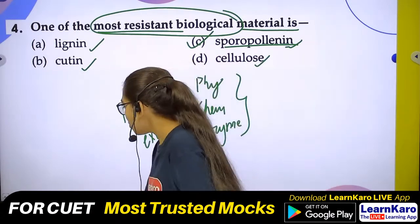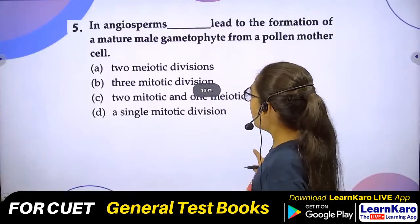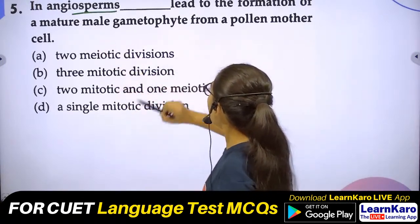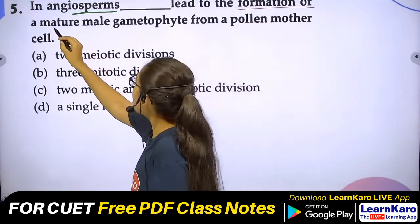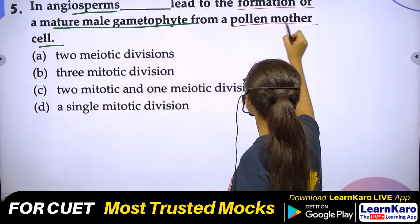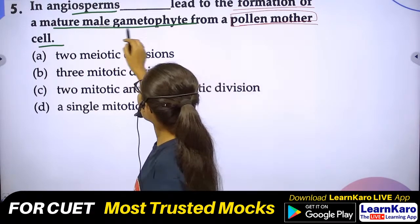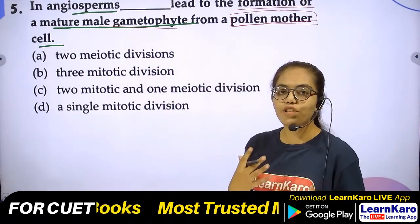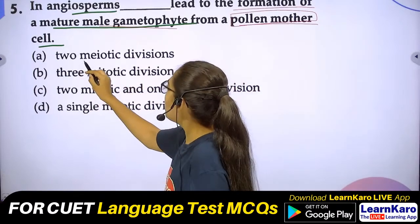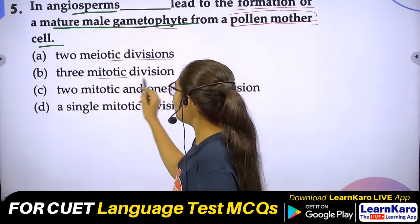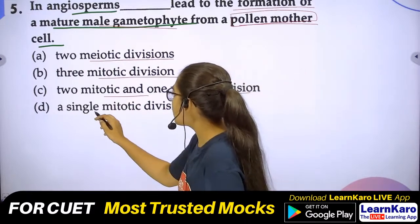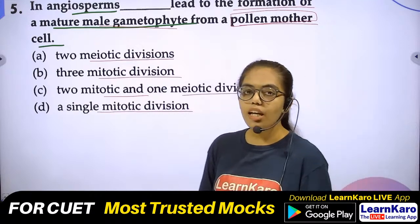Next question: A mature male gametophyte forms from a pollen mother cell. It asks through which divisions this happens. Options: A — 2 meiotic divisions, B — 3 meiotic divisions, C — 1 meiotic and 2 mitotic divisions, D — a single mitotic division.